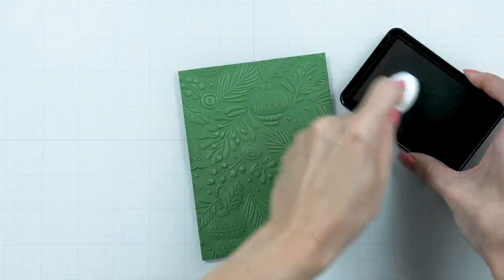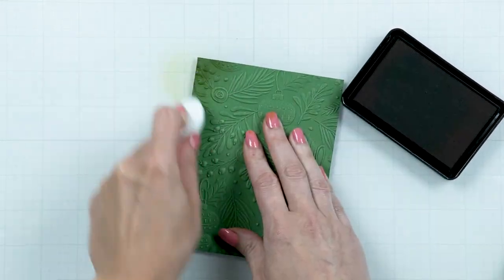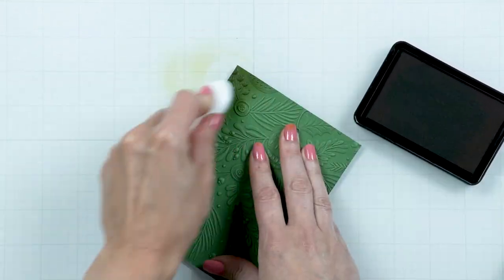Inkblend panel edges using dark green ink and adhere your panel to an A2 side folded card base.